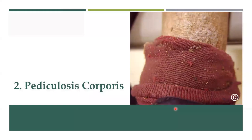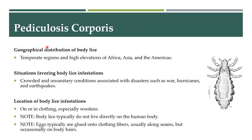Moving to pediculosis corporis — this is basically the body louse. In terms of distribution, it is mostly found in temperate regions, especially in Africa, Asia, and America. It favors crowded and unsanitary conditions, associated with places where people are fleeing wars or displaced after catastrophes like hurricanes or earthquakes. Because of the close contact and crowdedness in shelters and shanties, the body louse ends up spreading very easily.